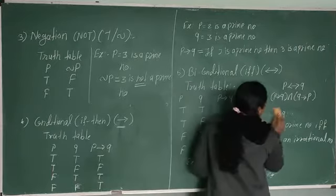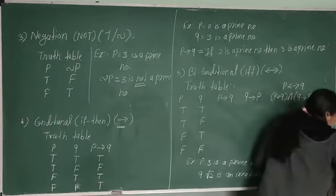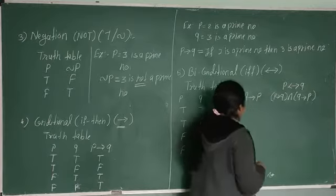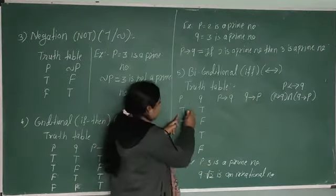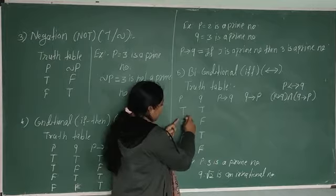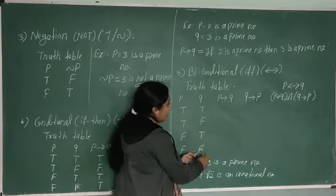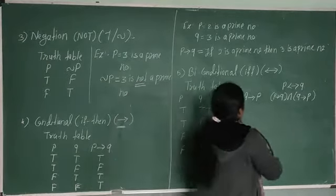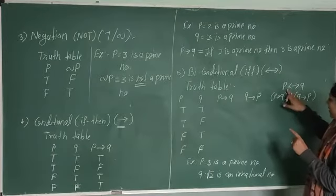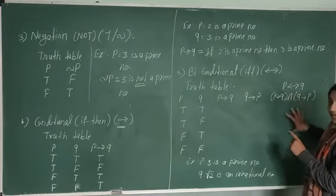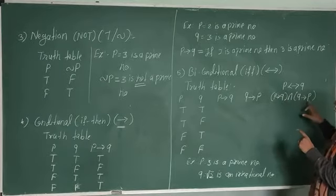Now how to write the truth table for a bi-conditional? Similarly, we have statements P and Q with four combinations: true-true, true-false, false-true, false-false. For the bi-conditional, we use the fact that P if and only if Q is equivalent to P implies Q and Q implies P — both must hold.